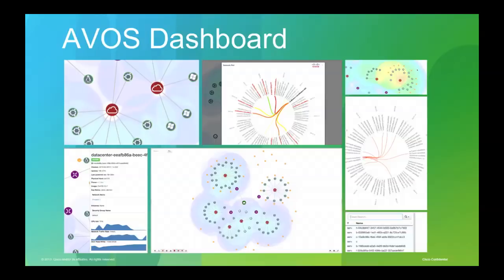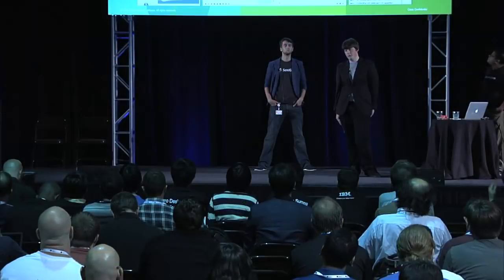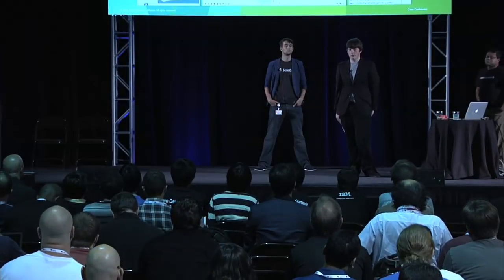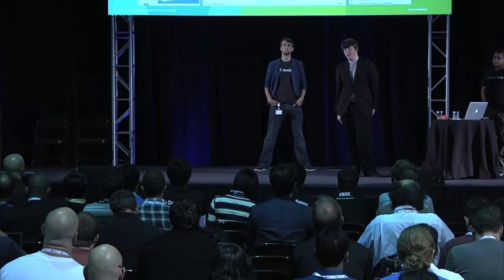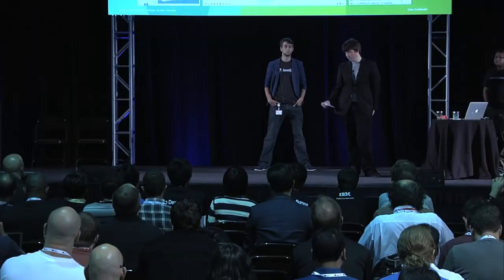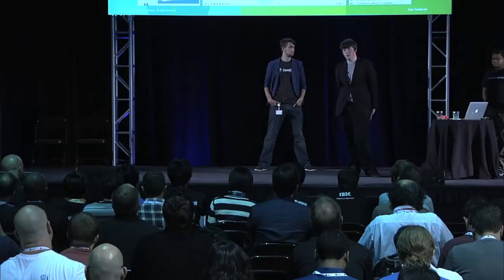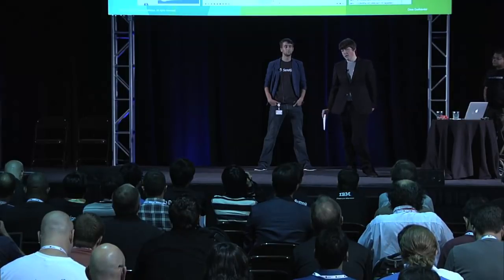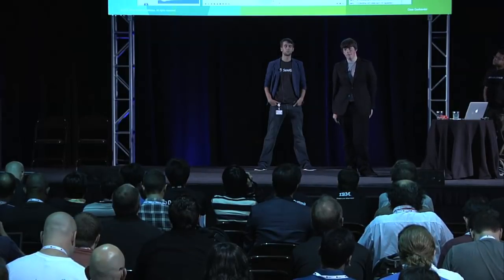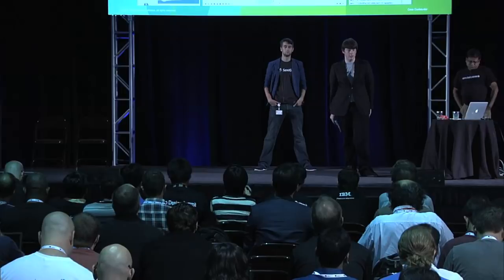At the Portland Summit last year, a few of our colleagues demonstrated an application called Curvature. This is a drag-and-drop tool for OpenStack deployment where you can create, delete, and control VMs at the click of a button. It's now been open sourced and is available on GitHub — the link will be available later. It's been used by multiple companies, including one right here at the Summit.